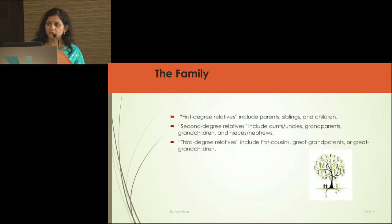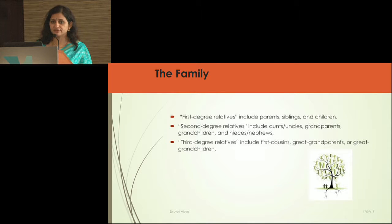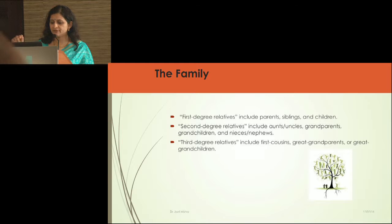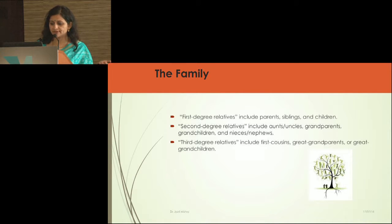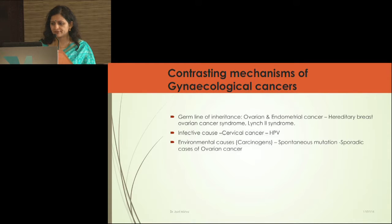When we talk of close family relatives and family history, we need to understand degrees of relation. First degree includes parents, children, and siblings — your immediate blood relatives. Second degree includes aunts, uncles, grandparents, grandchildren, nieces, and nephews. Third degree includes first cousins, great-grandparents, and great-grandchildren.